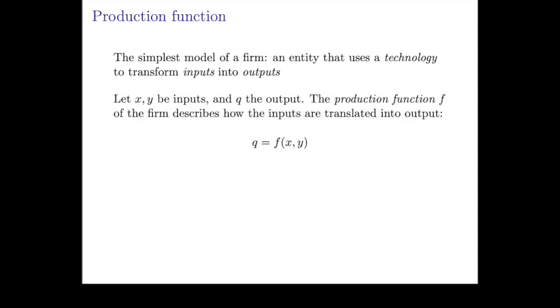If x and y are the inputs, so if you use x units of the first input, y units of the second input, and you get q units of output, well the production function tells you how those things are related. So the production function is some function f of the inputs.